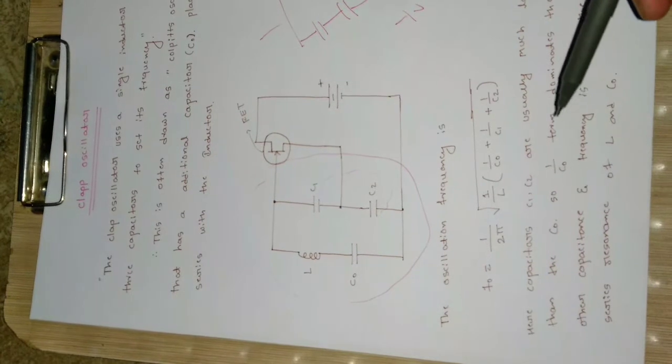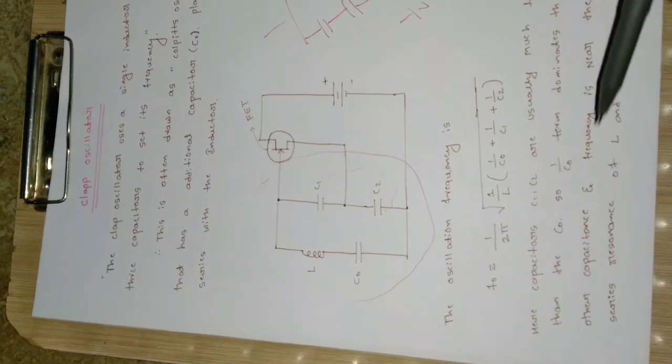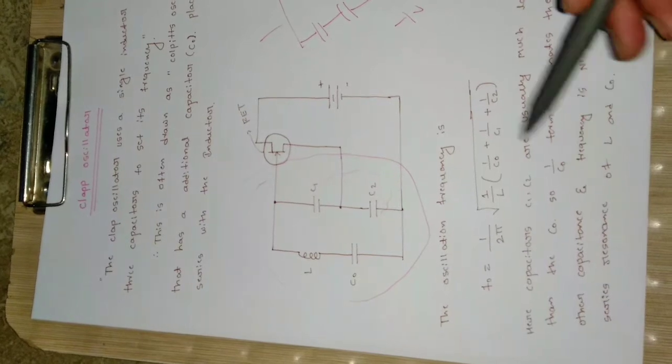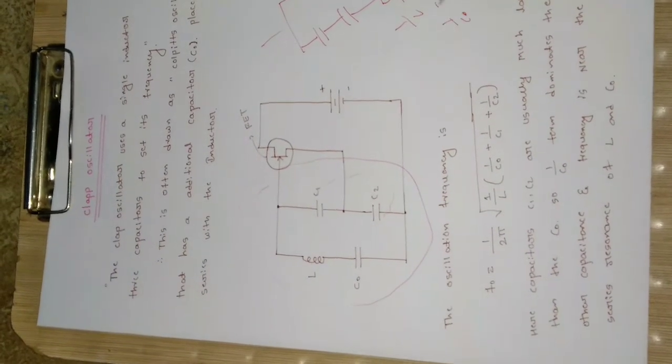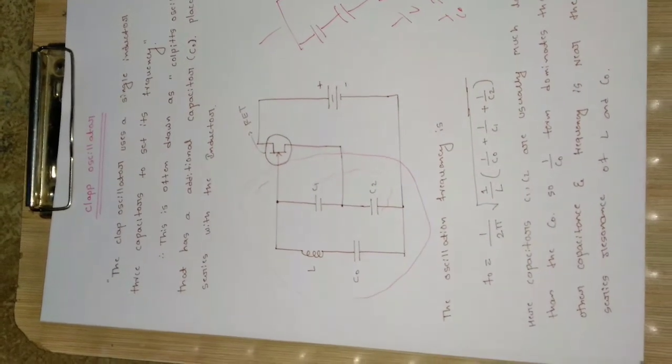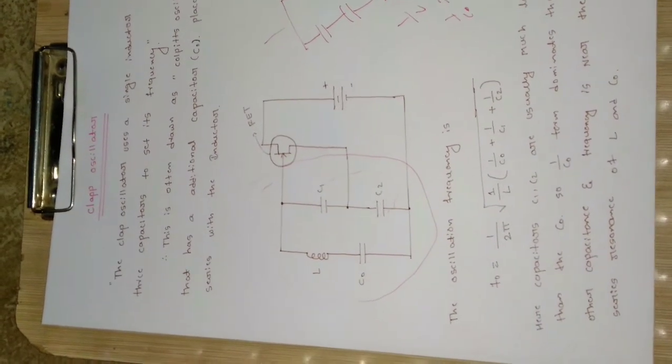Since C0 is much smaller, 1/C0 will dominate 1/C1 and 1/C2. The sum will be dominated by the 1/C0 term, so the frequency is near the resonance of L and C0.